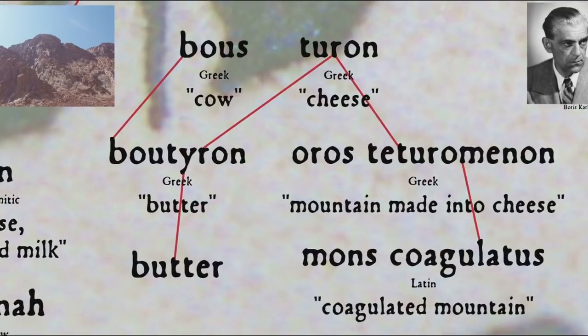The Septuagint translates this as oros tetyromenos, basically 'mountain made into cheese' or 'cheesified mountain,' related to turos, 'cheese,' part of bouturon, literally 'cow cheese,' or in other words butter — giving us the word butter. The Greek is then translated into Latin in the Vulgate as mons coagulatus, 'coagulated mountain,' or again 'cheesified mountain.' So the metaphor goes back a long way.